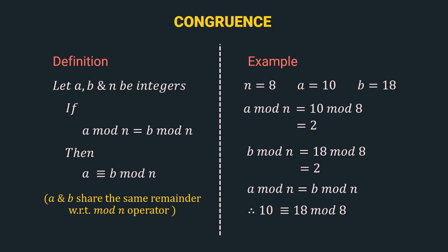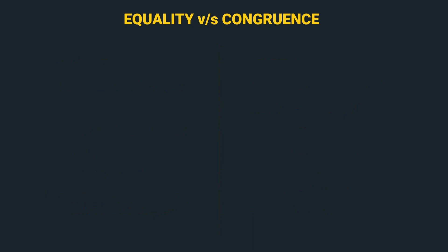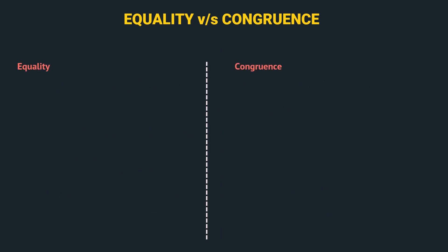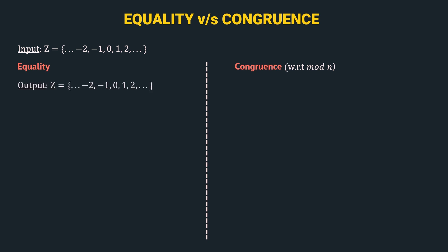I know it's a bit heavy on maths, but let's simplify this by comparing with the well-known equality operator. So, let's compare both operations. Also remember that when we use congruence in cryptography, it is always with respect to a mod n, and that's the mathematical convention followed here. So here, the input is common for both — a set of integers. In case of equality, the output is also a set of integers. However, in the case of congruence, the output is Zn, which is a set of integers from 0 to n-1.